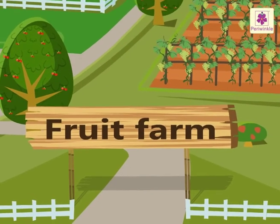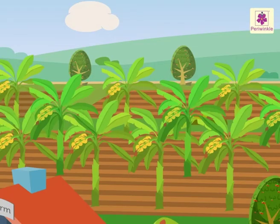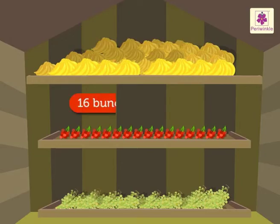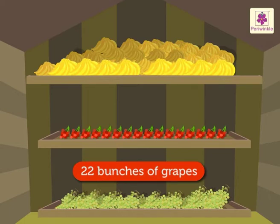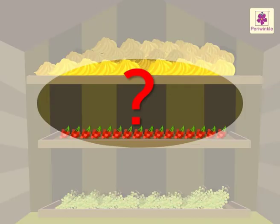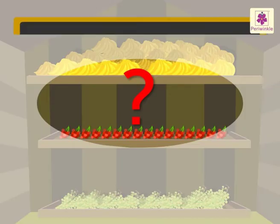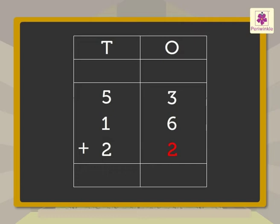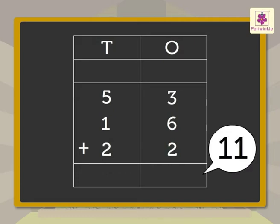Can you see that fruit farm? There are so many bunches of fruits here. There are 53 bunches of bananas, 16 bunches of cherries, and 22 bunches of grapes. How many bunches of fruits are there in all? Here we have to add 53, 16, and 22. Add the ones: 3 plus 6 plus 2, which is equal to eleven.